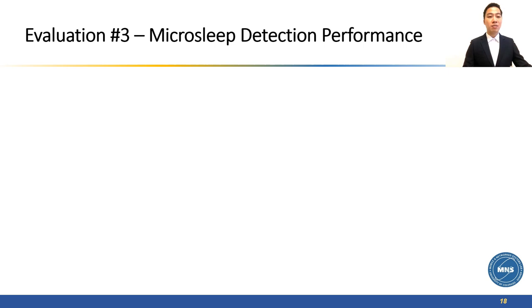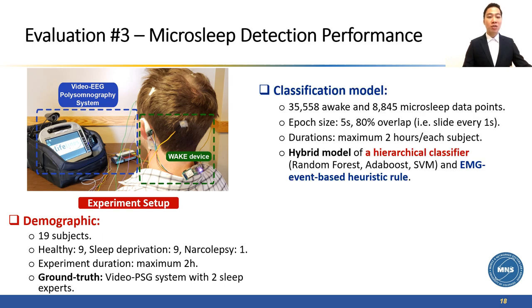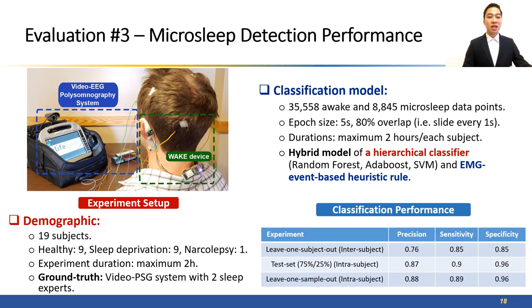In the third experiment, we evaluated the ability to detect microsleep with WAKE by conducting the Maintenance of Wakefulness Test on 19 subjects. The video EEG system and the scoring from two sleep experts were used as the ground truth. Our dataset had more than 40,000 data points. We developed a hybrid classification model to classify awake and microsleep epochs. In the leave-one-subject-out validation, our model can achieve 76% for precision and 85% for both sensitivity and specificity on an unseen subject. On a specific subject, we can achieve more than 87% for all of the metrics.